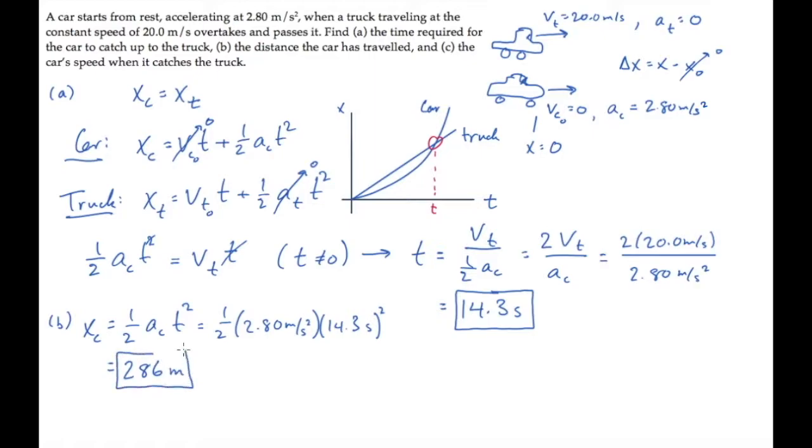Part c asks for the car's speed when it catches up to the truck, and now we can use the time-dependent velocity kinematic equation. The initial velocity is zero for the car. We substitute the acceleration and the time to find it equals 40 meters per second. When the car catches up to the truck, the car is moving twice as fast as the truck is.